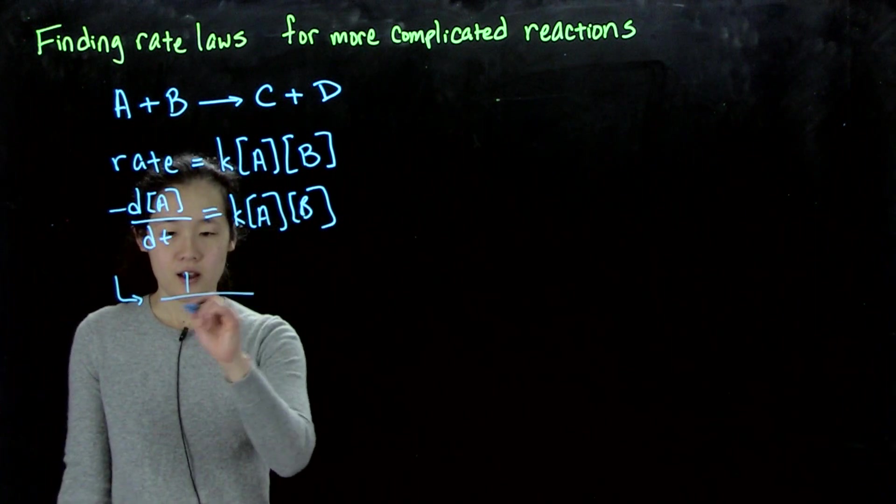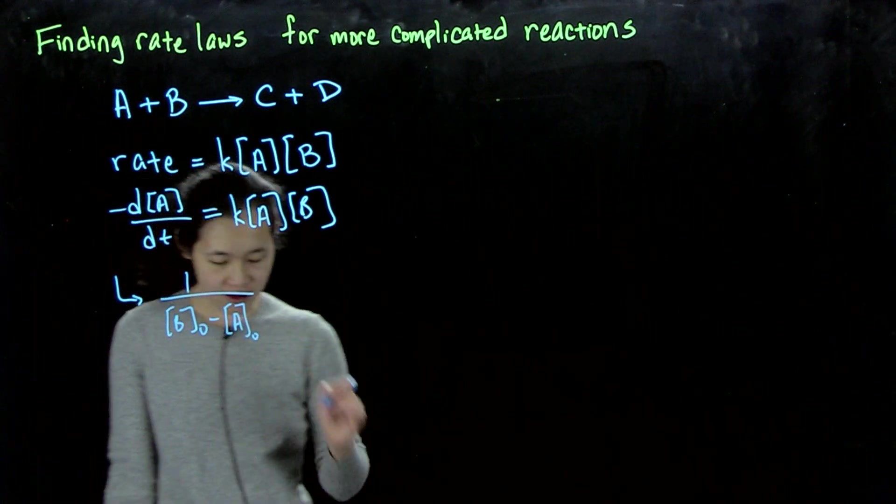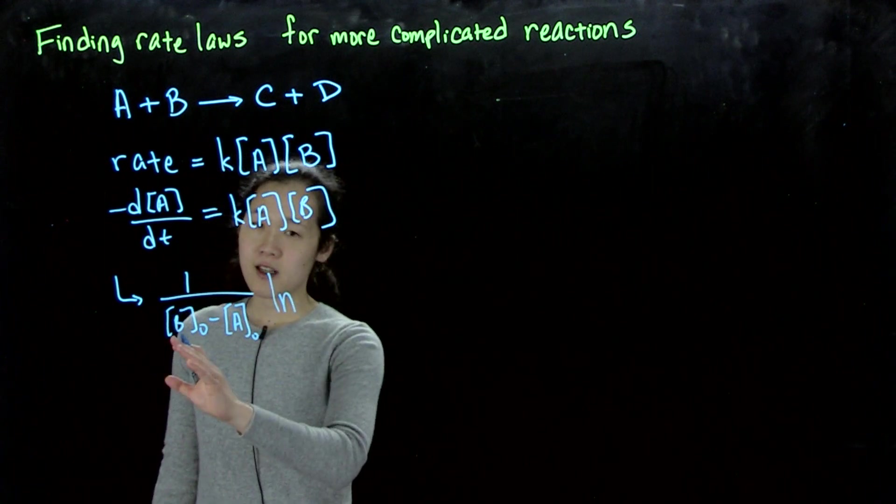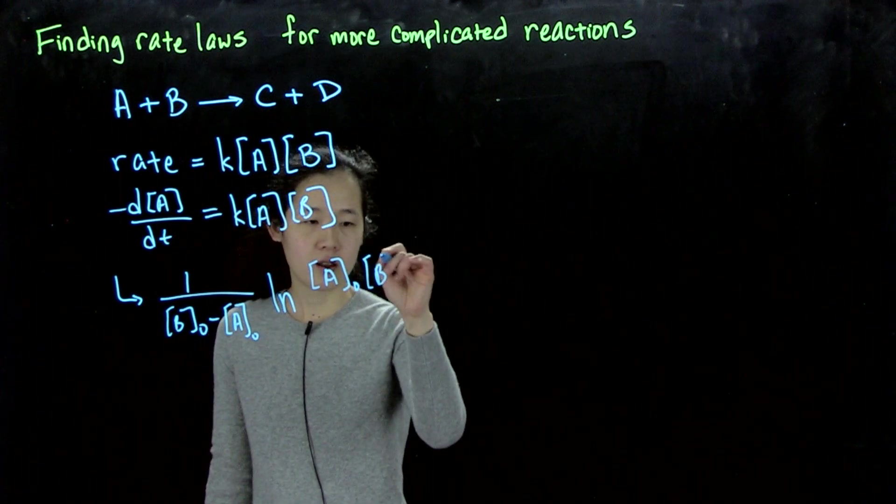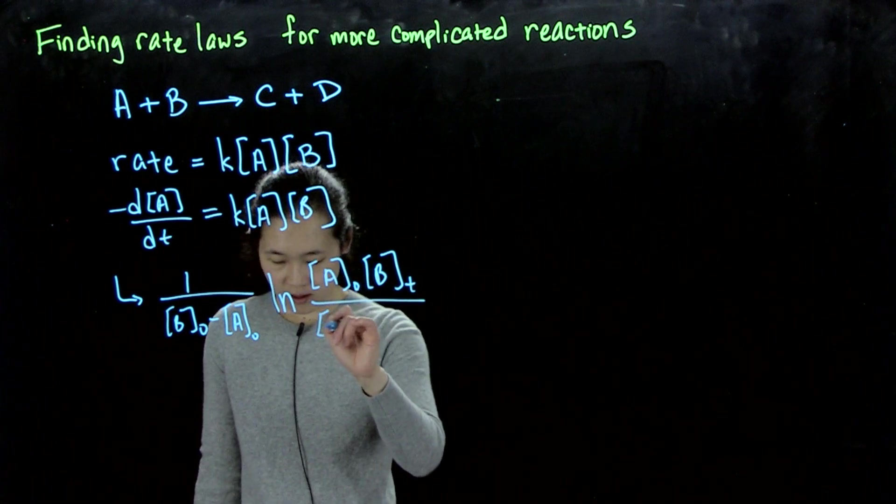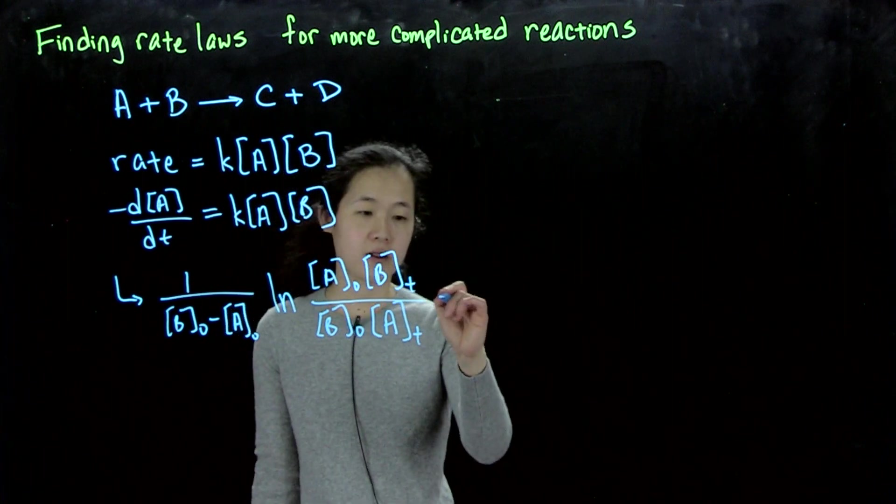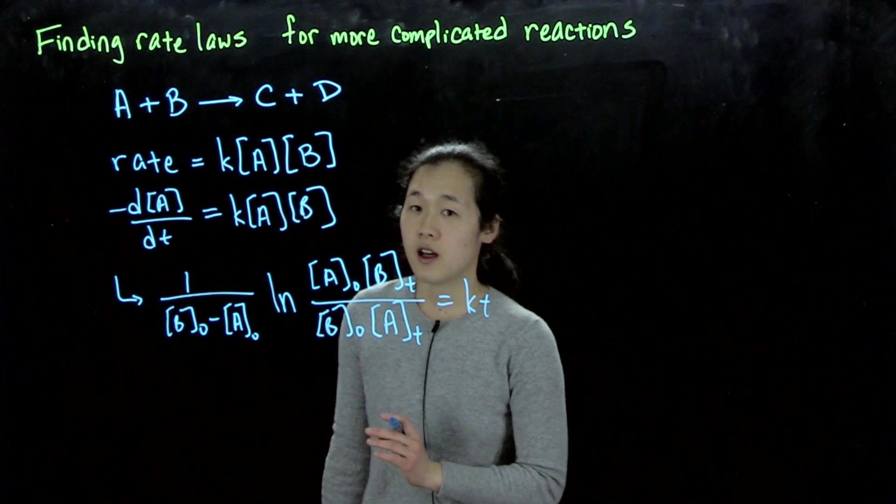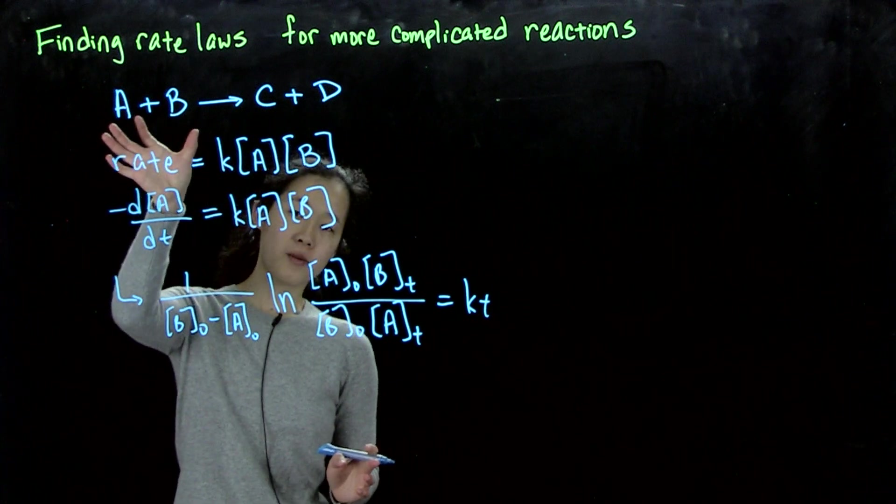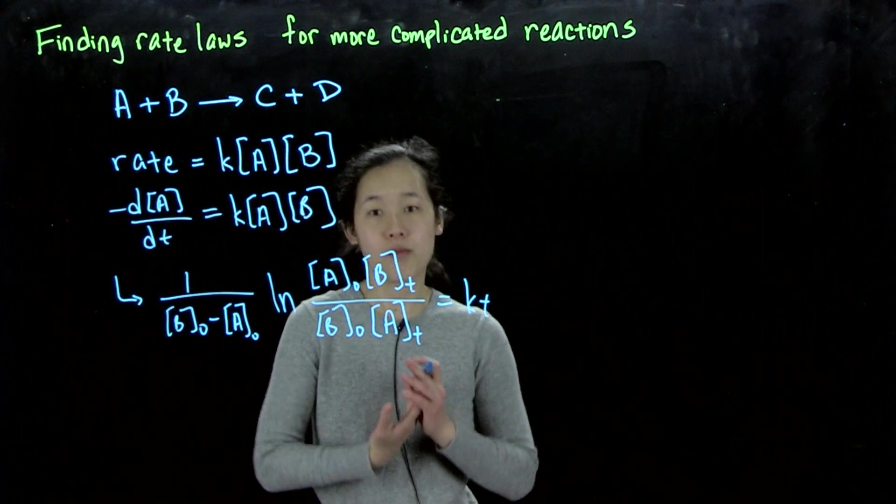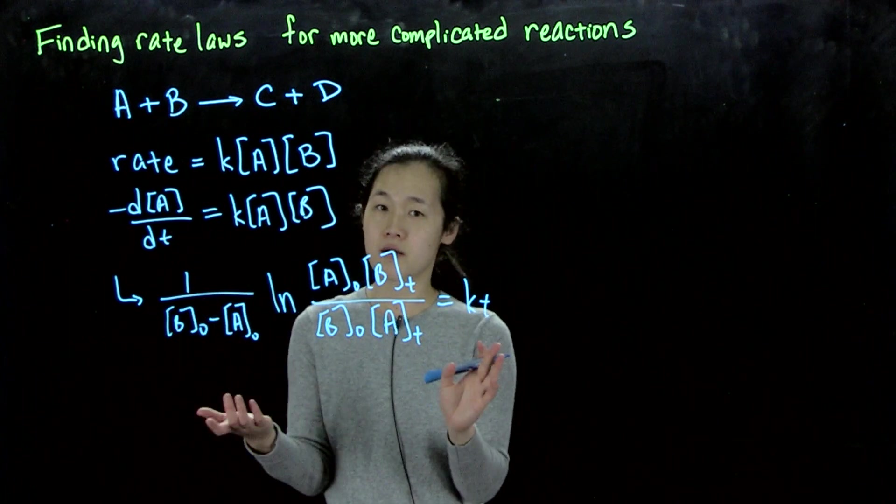And so the solution, for those of you who have taken math more recently than I, which should be all of you, is this fraction involving initial concentrations of A and B times the log of this fraction, and this is going to be equal to kT. So as you can see, what this is, I'm just trying to show you, if we were to try to solve a multiple reagent reaction, which is many cases in chemistry, the integration of these rate laws quickly becomes more complicated.